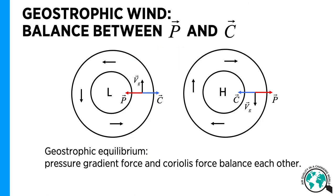In free atmosphere, the pressure gradient force and the Coriolis force are the only forces affecting the motion of air. This means they tend to balance each other. This is called geostrophic equilibrium.